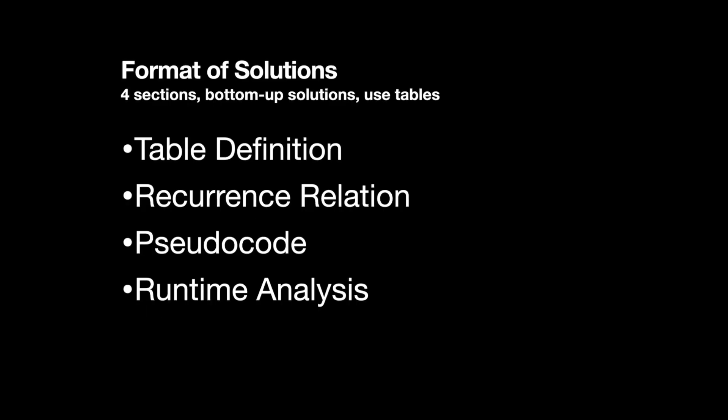The solutions in this part of the course will have four sections. A table definition where you describe what the elements of your table are. A recurrence relation where you talk about the base case and how you recur on the base case to build up the elements of your table. Then you build out an algorithm using these two sections and write it out using pseudocode, accounting for all possible edge cases. And lastly, you analyze the running time of your algorithm.